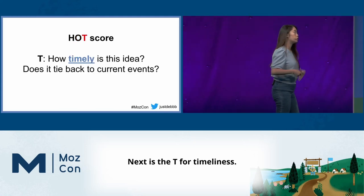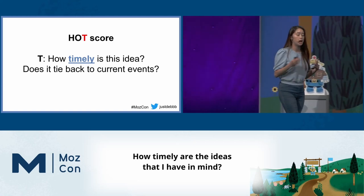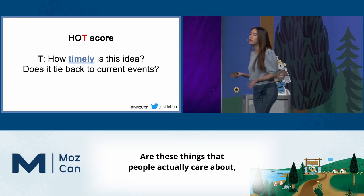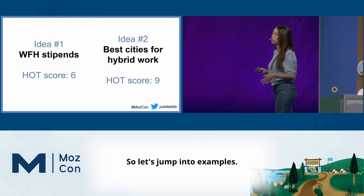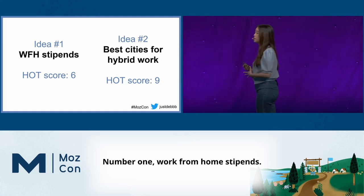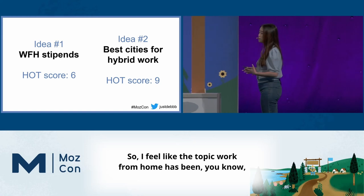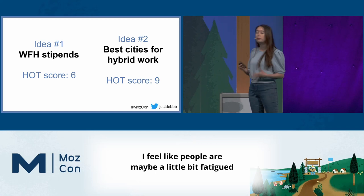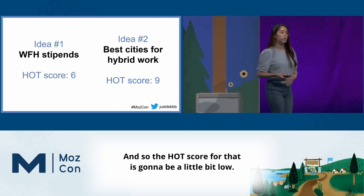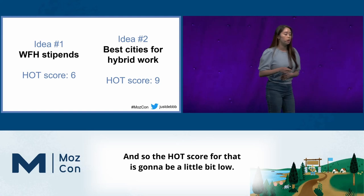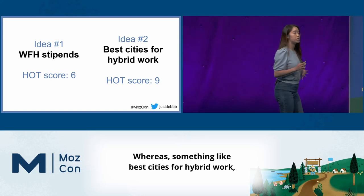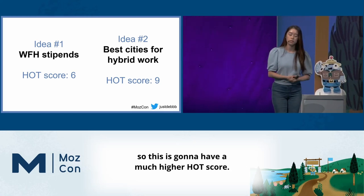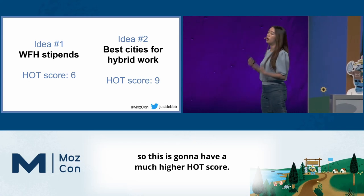Next is the T for Timeliness. How timely are the ideas that I have in mind? Do they tie back to current events? Are these things that people actually care about, or are we tired of hearing about it? For example, the topic 'work from home' — we've talked about it a lot in the past two years and people may be a little fatigued hearing that type of news, so the HOT score for that is going to be a little bit low. Whereas something like 'best cities for hybrid work' is more top of mind — people are going back to the office — so this is going to have a much higher HOT score.